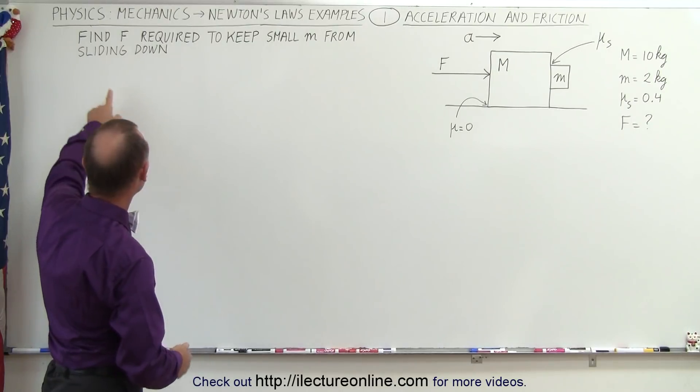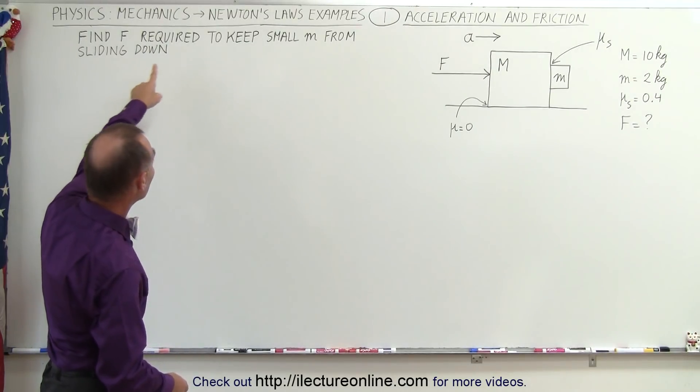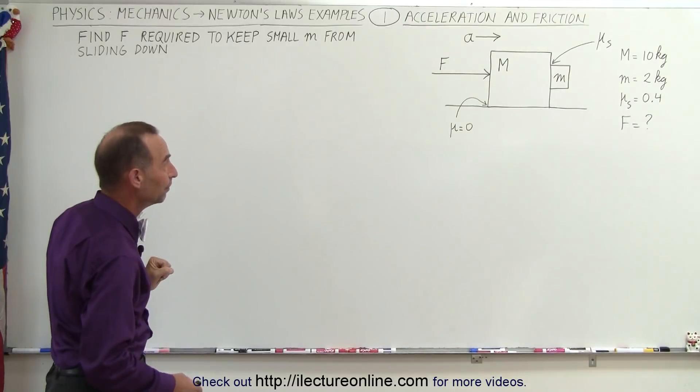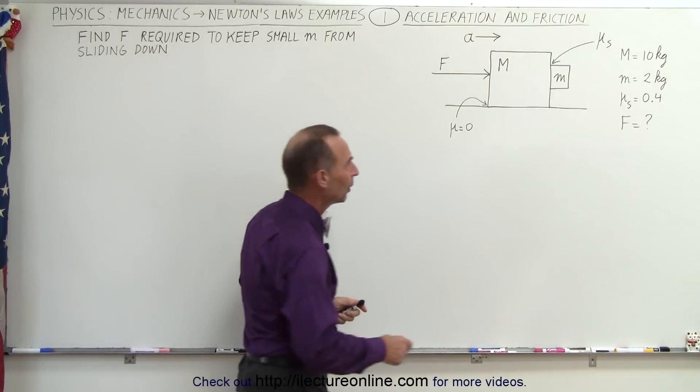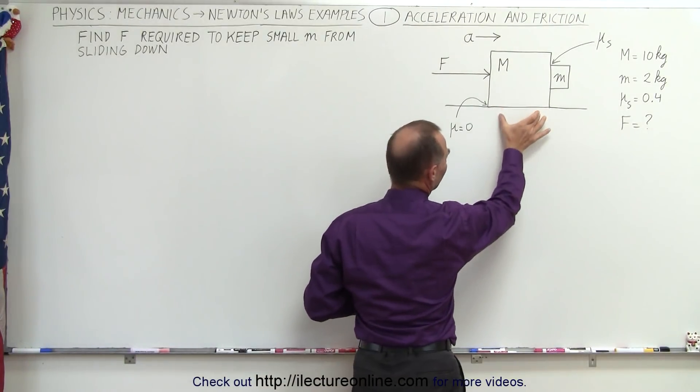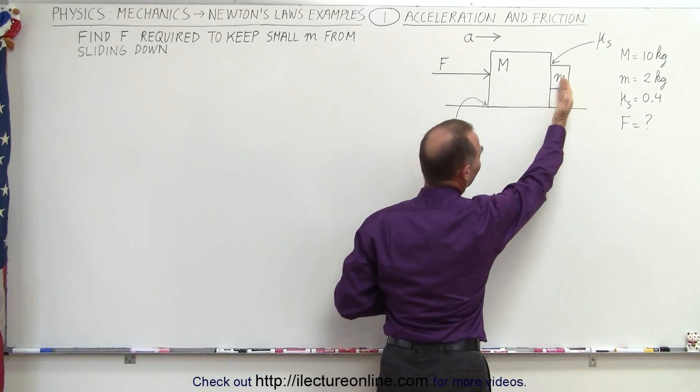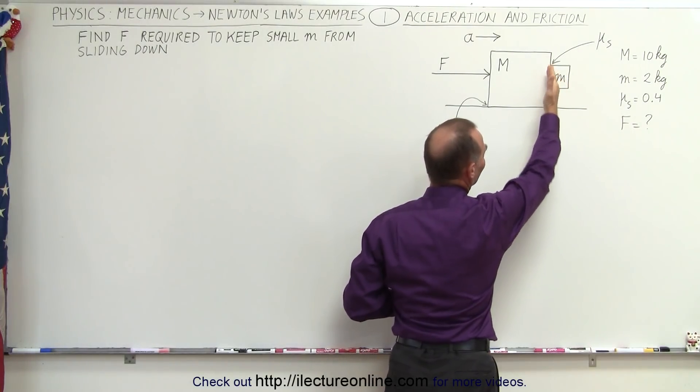For example, in this example, we are supposed to find the force required to keep the small mass from sliding down. So what's happening here? We have two masses, a large one resting on the floor, and a small one seemingly magically attached to the first one.